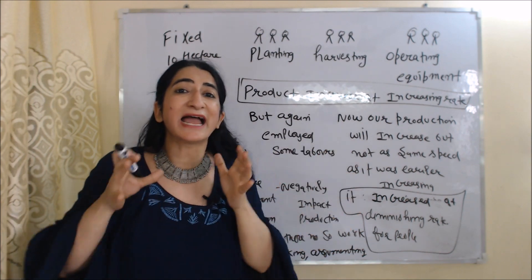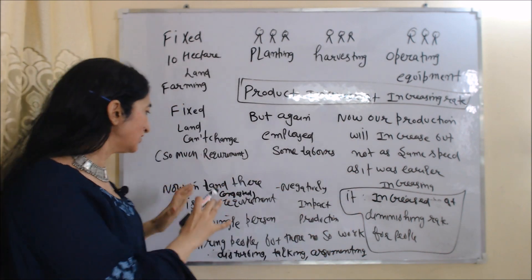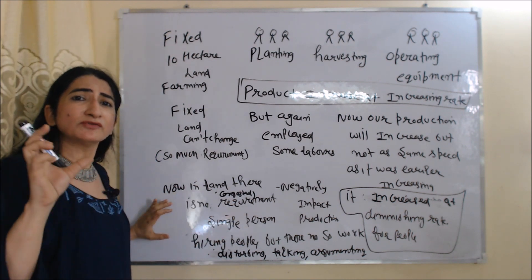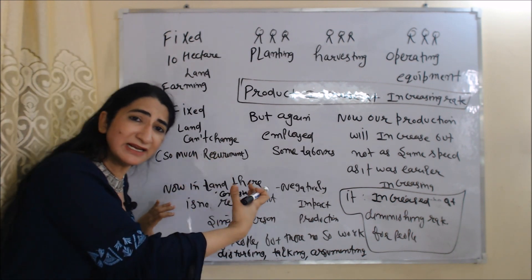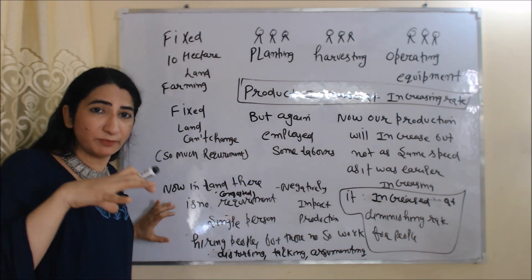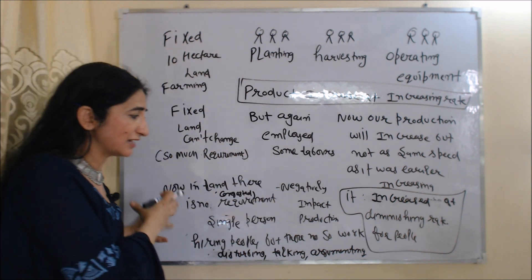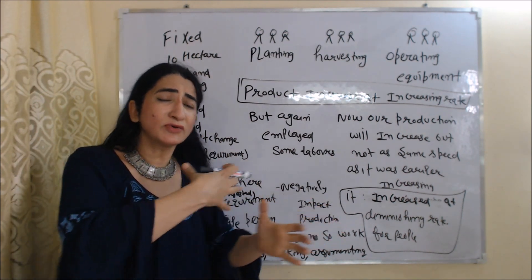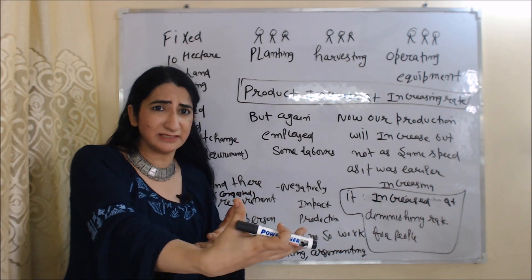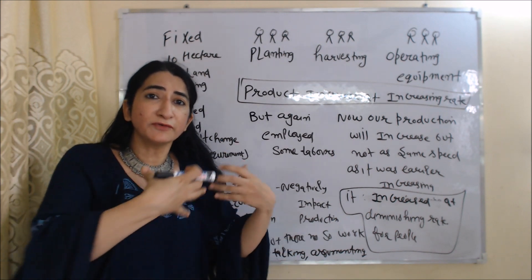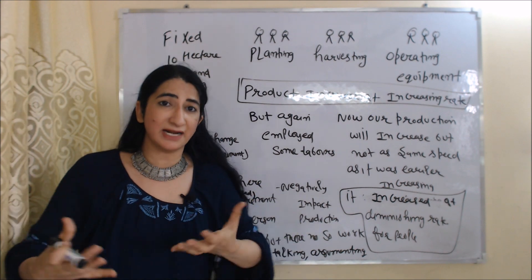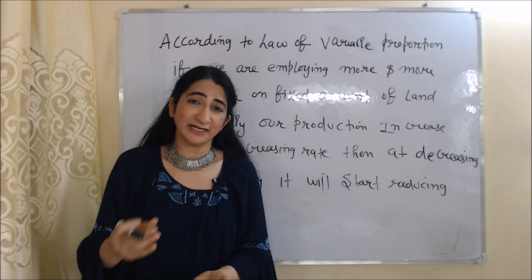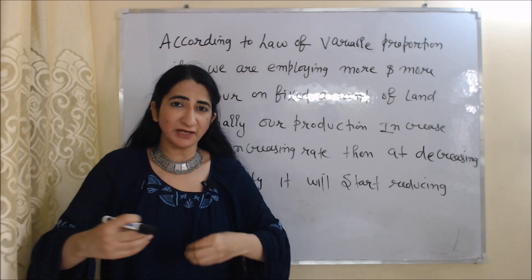In the third stage, our land has become congested. There is no requirement for even a single more person, but we again hire employees. This negatively impacts production — the extra workers have no work, they are disturbing others, talking to each other, arguing. As a result, instead of increasing, our production starts reducing.